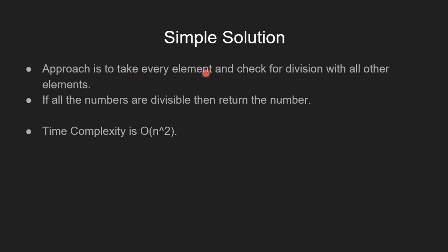If all the numbers are divisible, then return the required number. The time complexity is O(n²) since there are two for loops. This is required to check every element and check for division with all other elements.